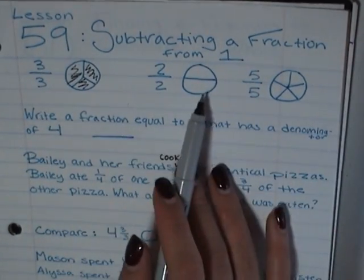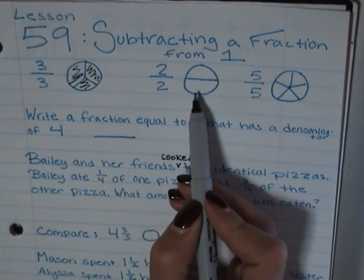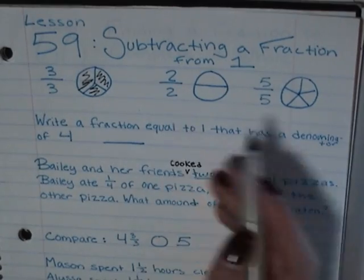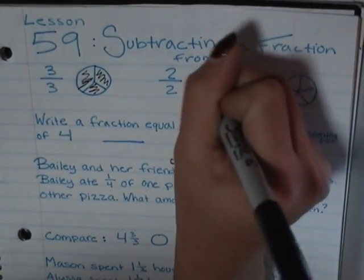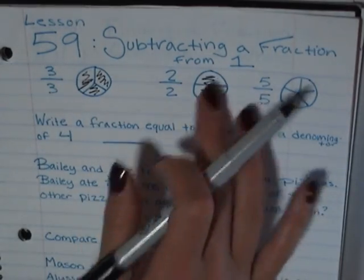Same if we come over to this one. It is out of two. Our denominator tells us how many pieces it is out of, and then our numerator is going to tell us how many pieces we have. And if we have two, then we have one whole.